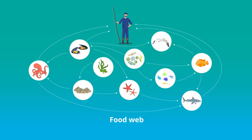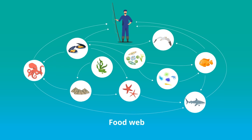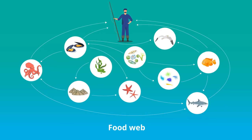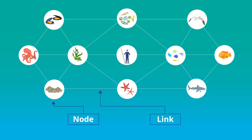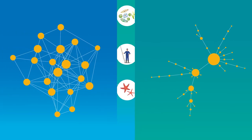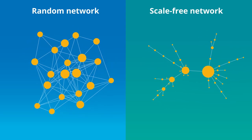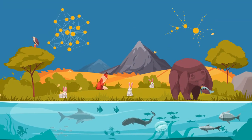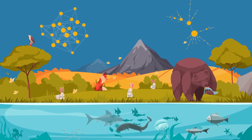A food web is a graphical representation of the trophic interactions in an ecosystem. This interconnection between different species forms a network with nodes connected by links. The number of connections per node, or the degree, has a range of distributions, such as the random degree distribution and scale-free degree distribution. But the origin of these network architectures in nature is still not well understood.